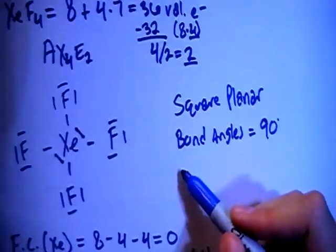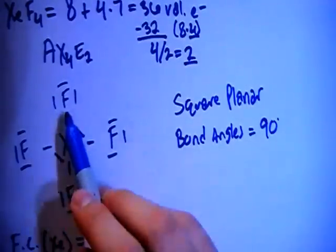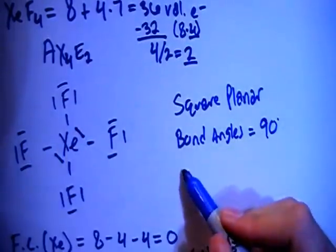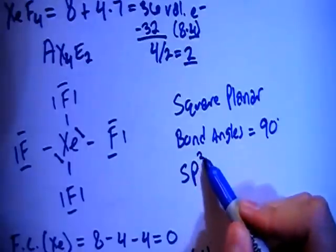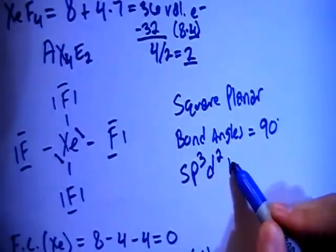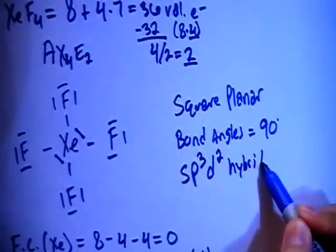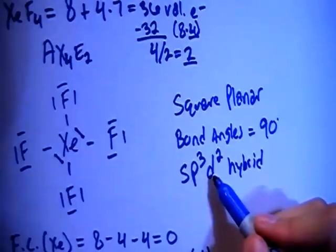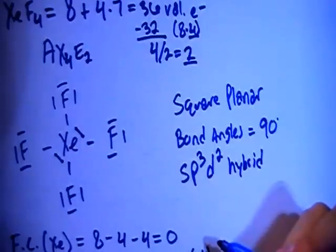In terms of hybridization, we're going to have 1, 2, 3, 4, 5, 6 bonding sites. So that means S, P, 3, D, 2 hybrid orbitals. So 1S, 3Ps, 2Ds, total of 6 hybrid orbitals.